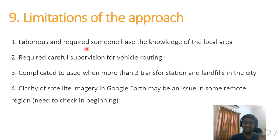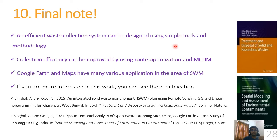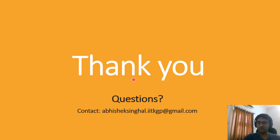In that case, you should use multi-criteria decision modeling. I will end my presentation with this final note: we can develop an efficient waste collection and storage system using Google Earth and Google Maps, whose efficiency can be further improved using route optimization and multi-criteria decision modeling. If you are more interested in how Google Earth and Google Maps can be used in different waste management and environmental studies, you can also look at some of our recent publications. Thank you, and if you have any questions, please feel free to ask.